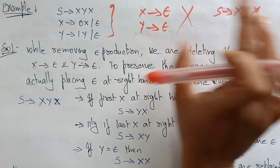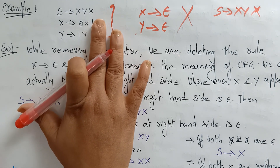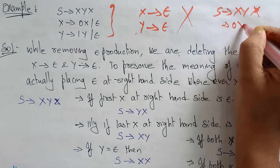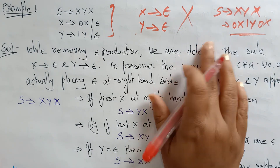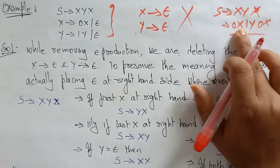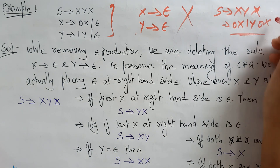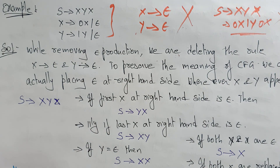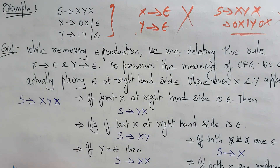Finally, it has to reach the terminal symbol. Suppose you simply remove Epsilon without doing any operations — in place of X you substitute 0X and in place of Y you substitute 1Y. You will still be getting XYX repeating, and you can say this production is wrong — it's not a valid context-free grammar. So you have to follow the rules and eliminate the epsilon productions without disturbing the given context-free grammar.